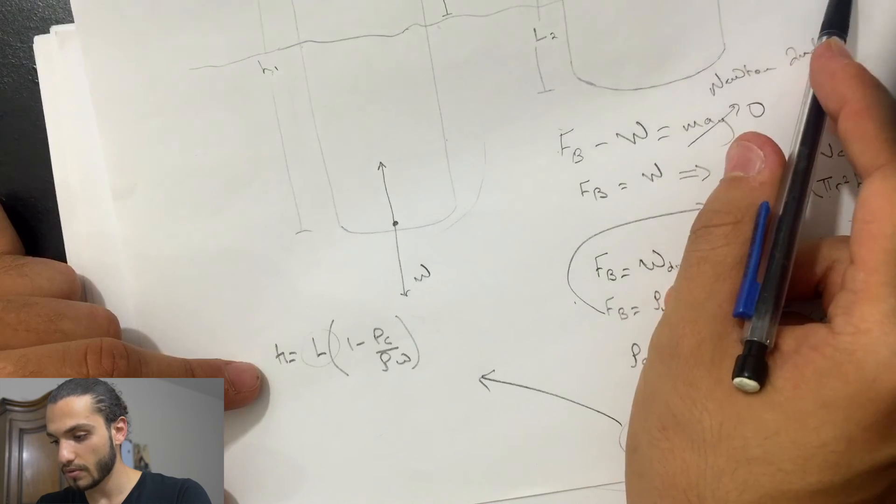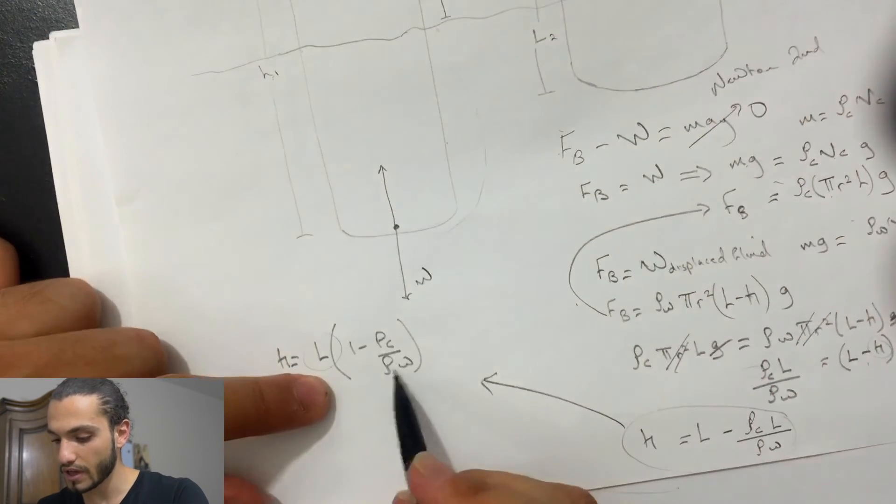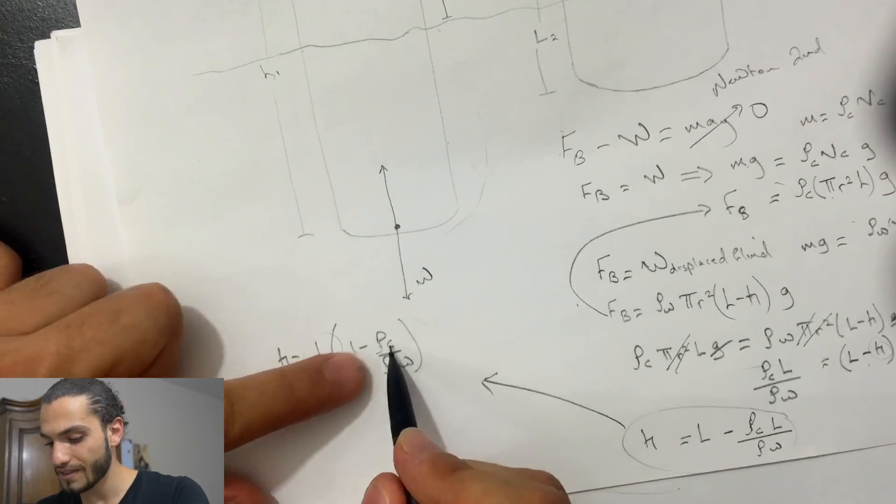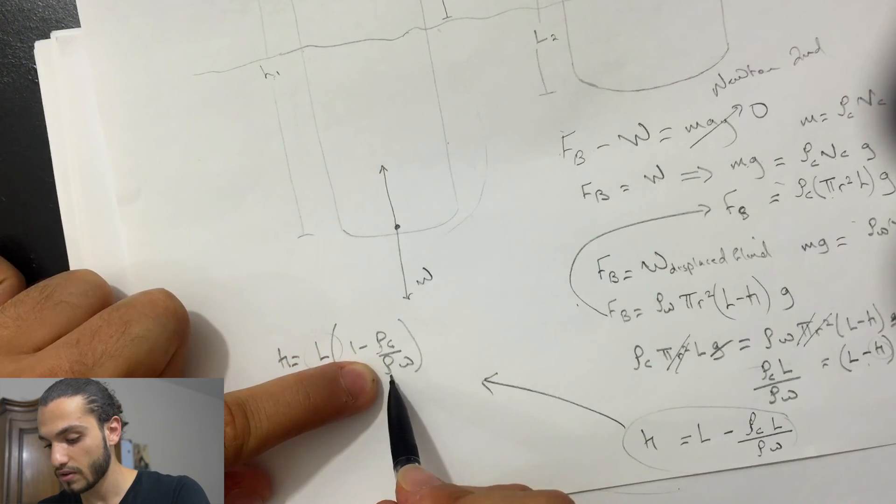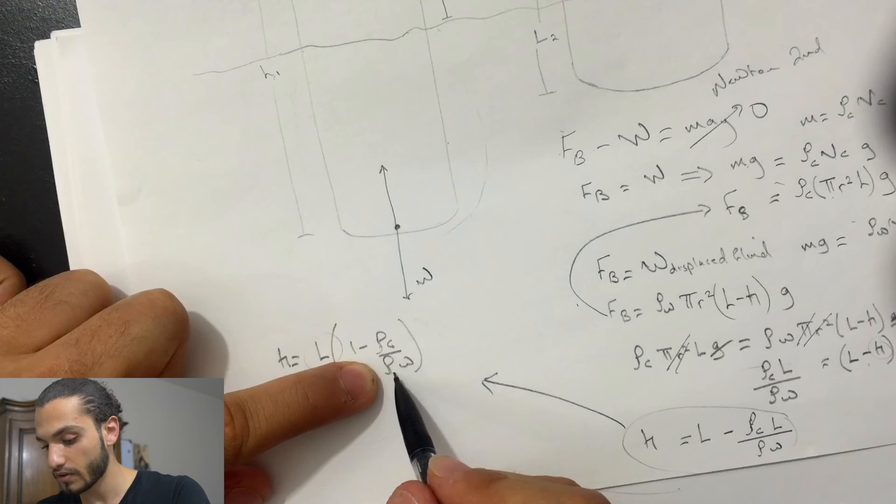But if you look at it, it doesn't depend on the radius of the cylinder, it just depends on the height. So what they want us to do is they want to find H2 divided by H1.